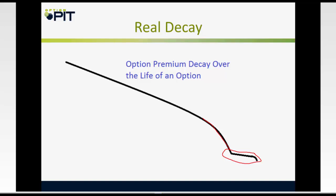The other big mistake traders make: when you are making adjustments or managing a position, do trades that reduce margin, not trades that increase margin. I've seen more people lose money on adjusting trades than actually lose on the trade themselves. Put a hard maximum loss on every trade — how much are you willing to lose? And on your winners, always be closing; take money off the table.